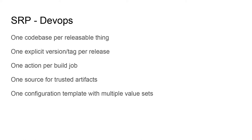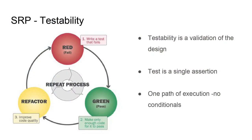One source for trusted artifacts, a single configuration template — but maybe that template breaks out into multiple value sets: one for dev, one for production, one for my desktop, one for yours. Another way to look at Single Responsibility beyond just the codebase is testability. Each thing should be testable, each of those tests should have a single path of execution, a single assertion. And just the simple quality of — is it testable? Is there something I can identify about this thing I built that I can describe in terms of a test?